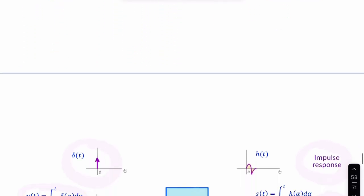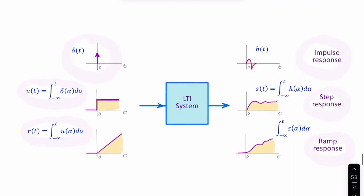Now the same will apply if you have a linear time invariant system. And you apply a unit impulse to the input, the output is what we call the impulse response h of t.